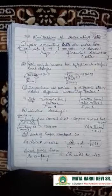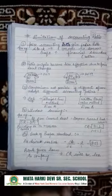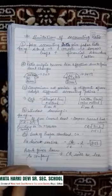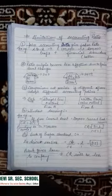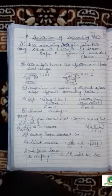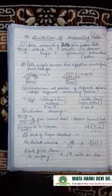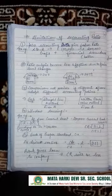Hello everyone. Today we are going to start our third lecture on Chapter 5, that is Accounting Ratios, and today we will discuss about the limitations of accounting ratios. So let's just start with the first point.